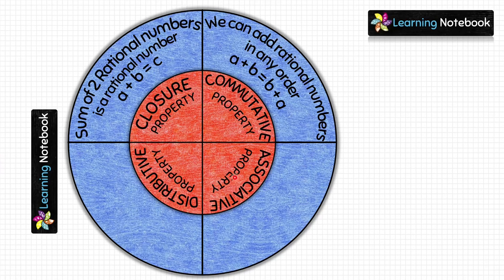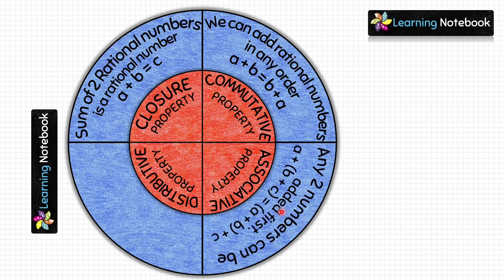Next is associative property. It states any two numbers can be added first — it doesn't matter which two rational numbers are added first, their sum remains the same. The general form is (a + b) + c = a + (b + c). On the left-hand side b and c are added first, on the right-hand side a and b are added first, but the sum remains the same.